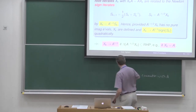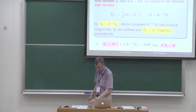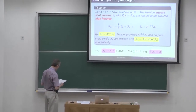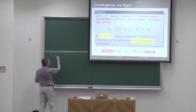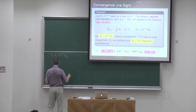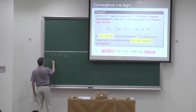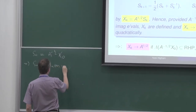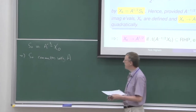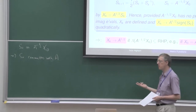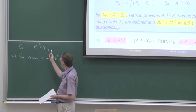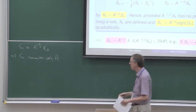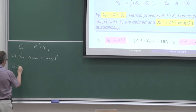Underlying the Newton square root iteration, there really is a Newton sign iteration going on. The proof is very easy. We have s0 equal to A to the minus-a-half times x0, and that means s0 commutes with A. The reason is that A to the minus-a-half is a function of A, therefore a polynomial in A. A polynomial in A times something that commutes with A will certainly commute with A. And so the proof is inductive.